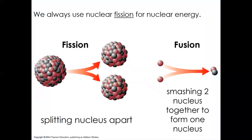Fission on the left-hand side is the splitting apart of a nucleus. Fusion on the right-hand side is the joining together of nuclei. We can't actually do fusion on Earth in any reasonable way to create energy, so we're left with nuclear fission.